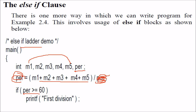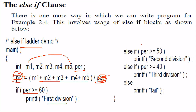Now, if the percentage is greater than or equal to 60, we say 1st division. Then, rather than putting if, then else, then again if-else inside this for checking all these conditions, we can use else if.